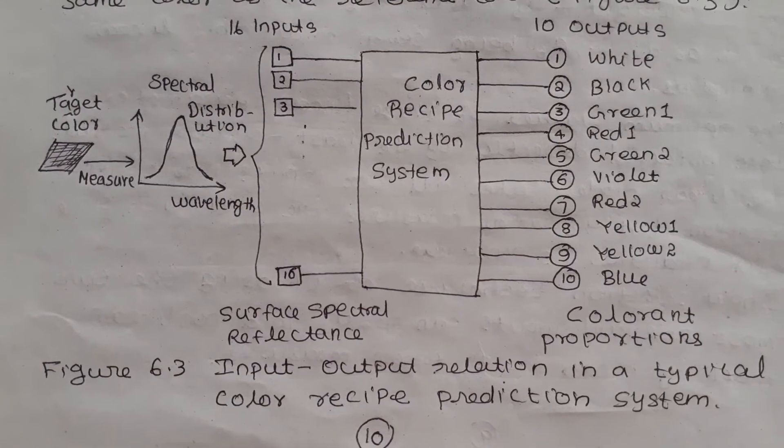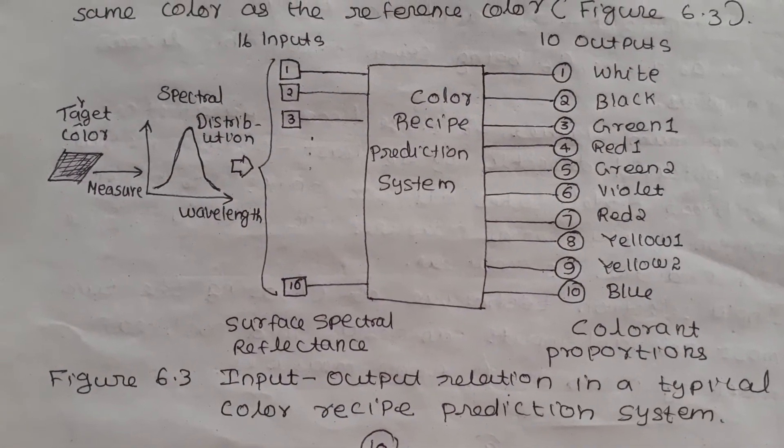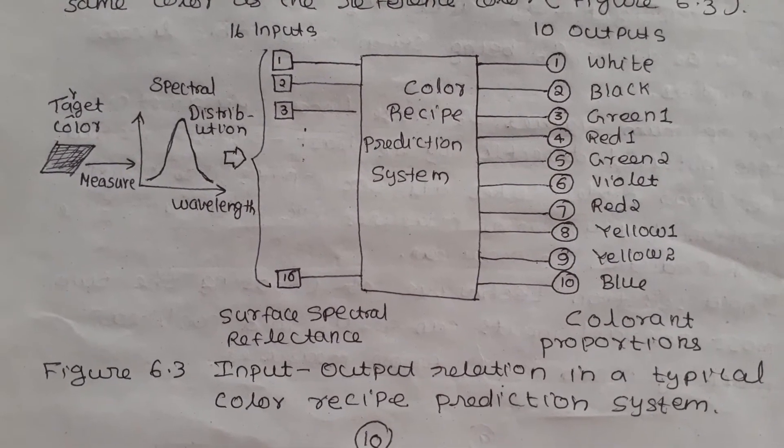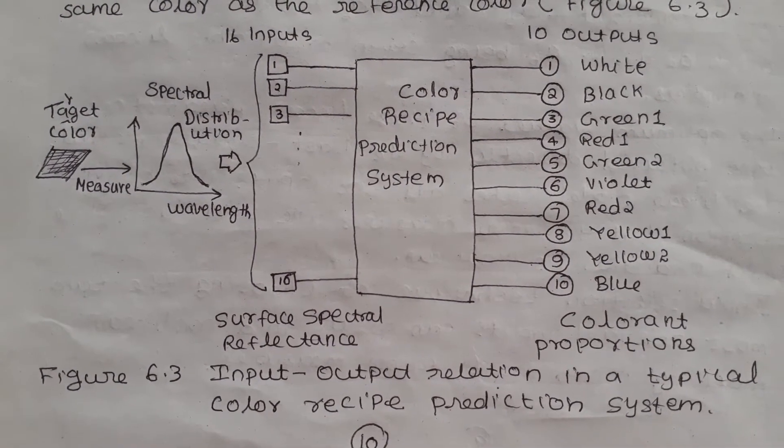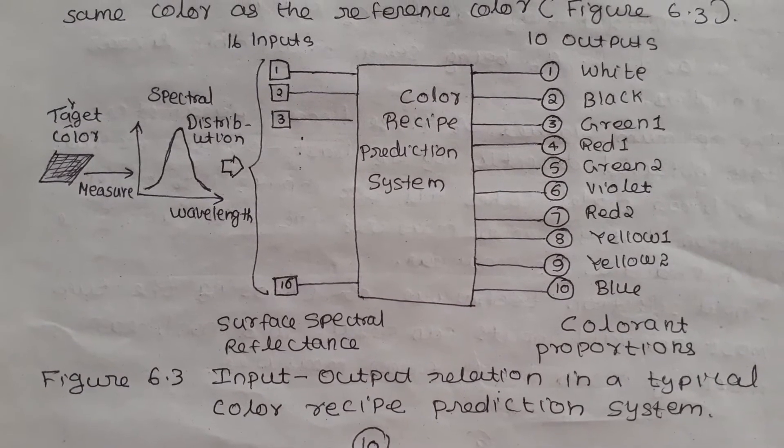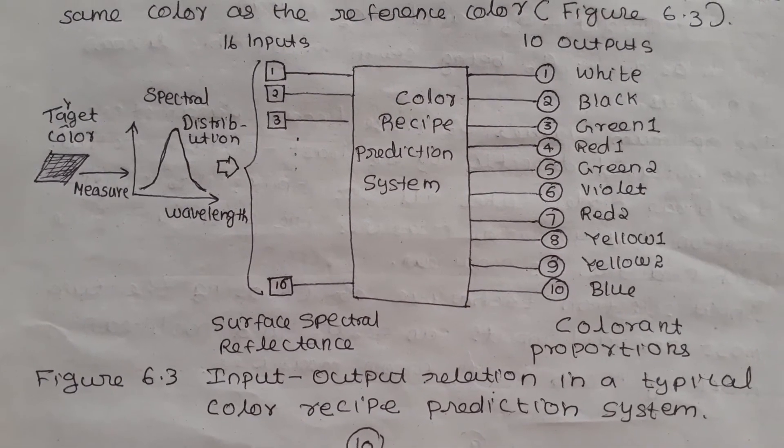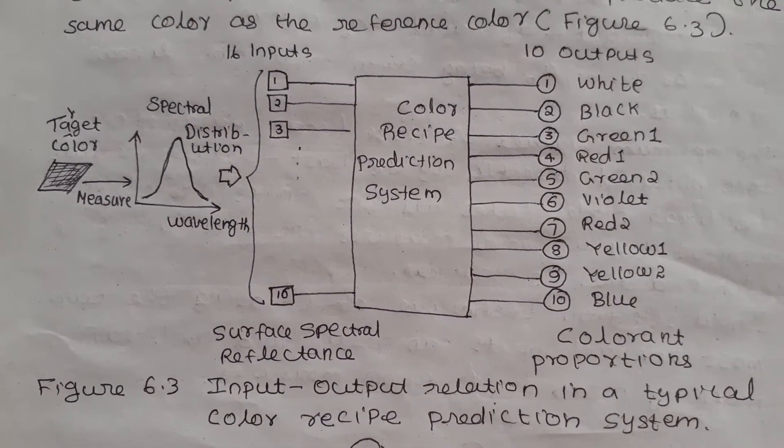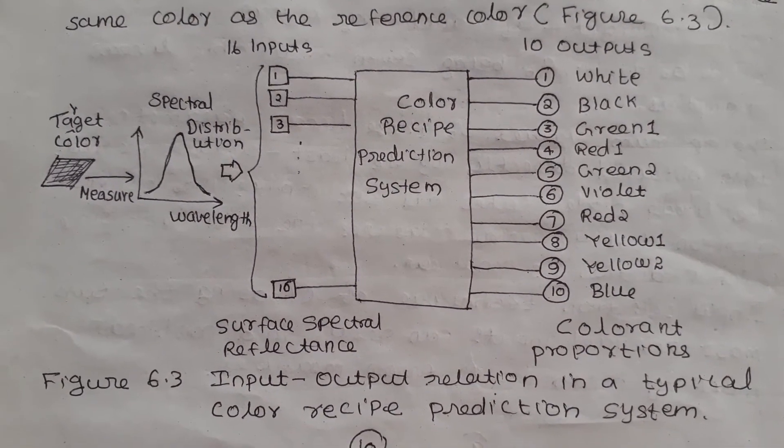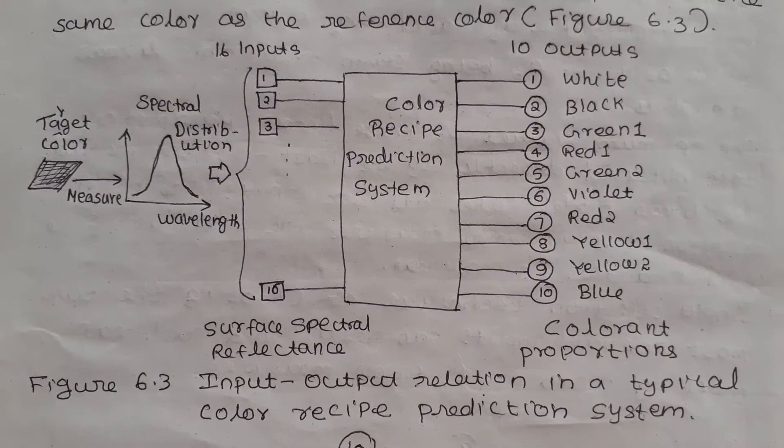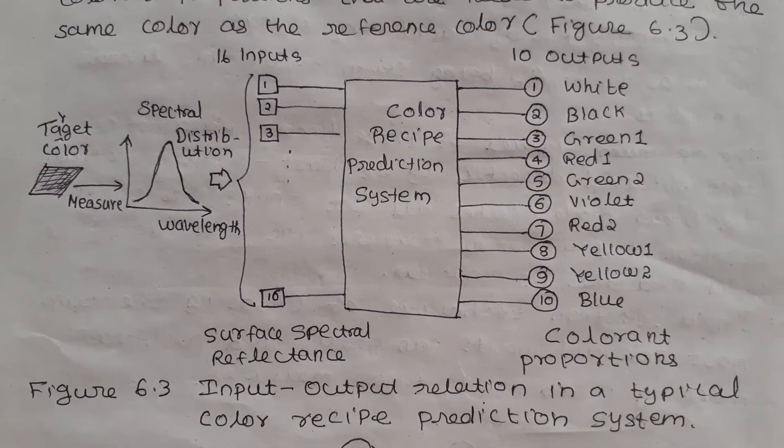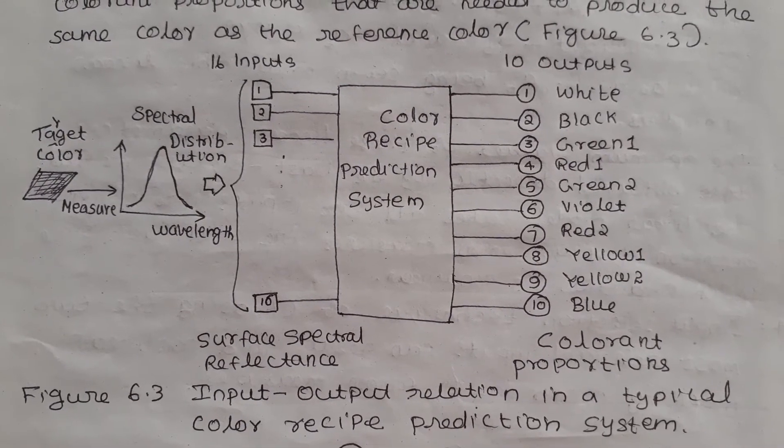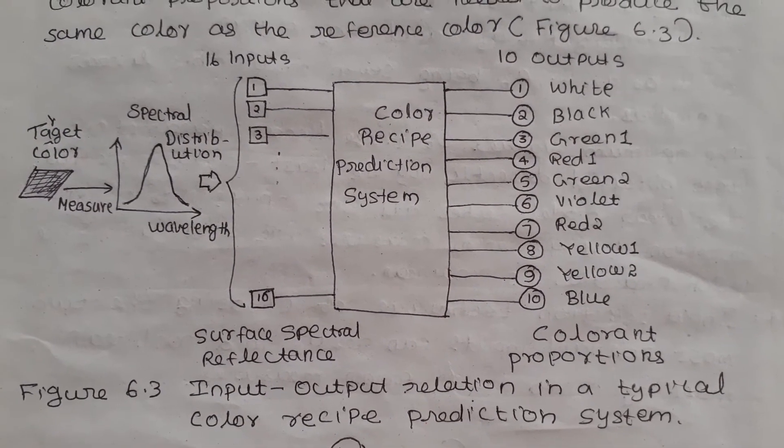The fourth concern is it is important to consider human visual sensitivity to color difference, which is closely related to perceptual attributes of color such as lightness, hue, and chroma. The fifth concern is some different combinations of colorants may have the same perceptual attributes of color as seen by humans.